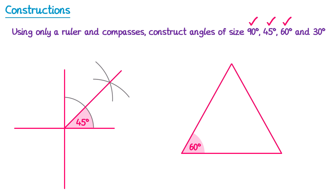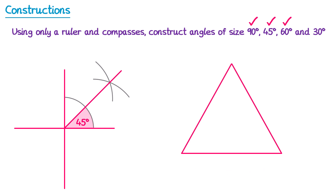There's only one more to go, which is 30 degrees. Well, if you divide 60 by 2, you get 30. So if we bisect this 60 degree angle, we'll have a 30 degree angle. So we'll construct an angle bisector of this angle, just like we did near the start of the video, and we end up with an angle bisector that gives us an angle of 30 degrees here.